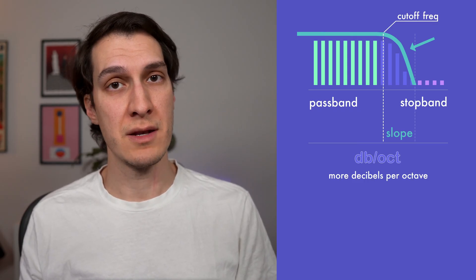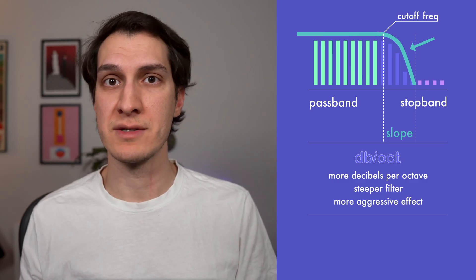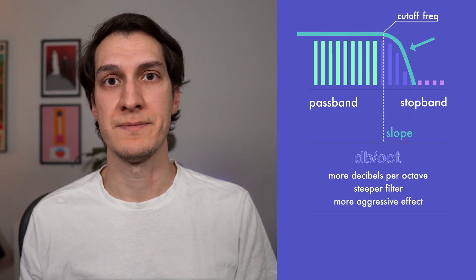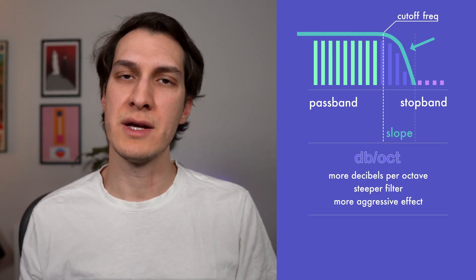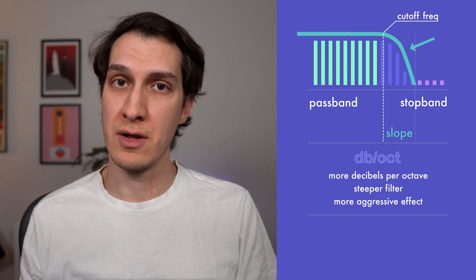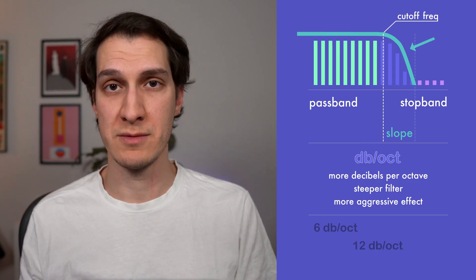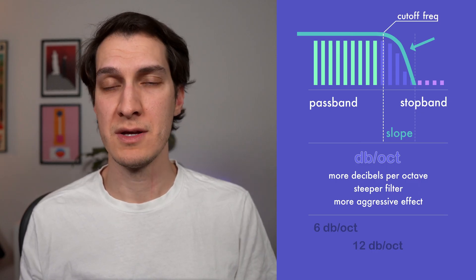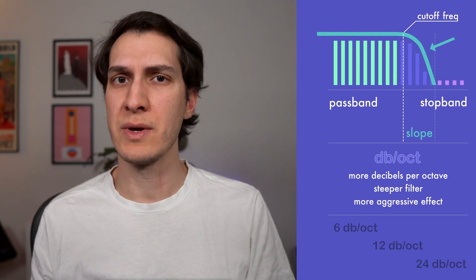The larger that number, the steeper or more aggressive the filter is. You'll often see filters categorized according to their slope, such as 6 decibels per octave, 12 decibels per octave, and 24 decibels per octave.